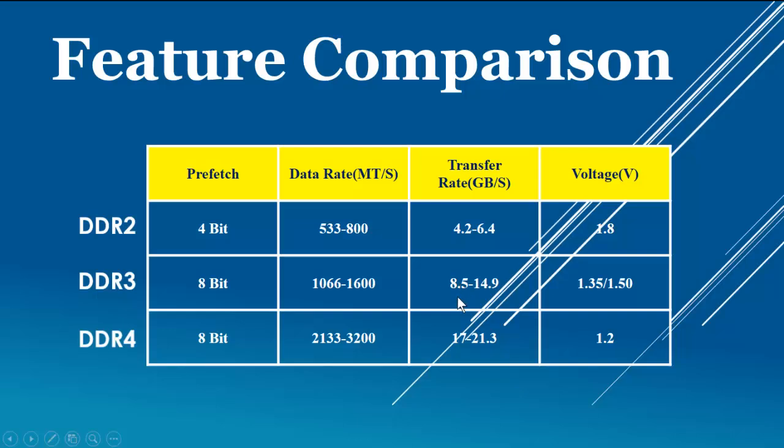In case of DDR3, it has 8.5 to 14.9 GB per second. And DDR4 has 17 to 21.3 GB per second transfer rate, which is very high as compared to DDR2 and DDR3.